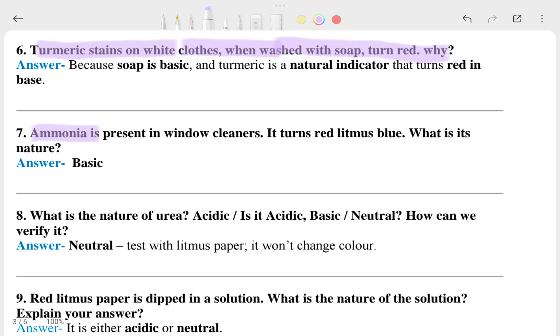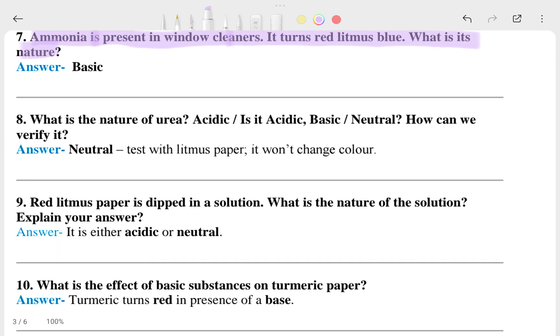Seventh: ammonia is present in window cleaner. It turns red litmus blue. What is its nature? This is a basic nature. Eighth question: what is the nature of urea? Acidic, base, or neutral? How can we verify it? Urea is what we use in fields; farmers use urea for killing insects, etc. If you are from a farming background, you know the uses of urea in the farming sector.